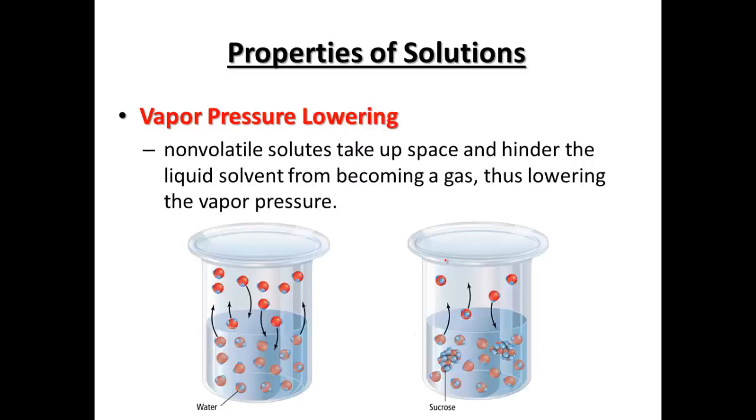If we add more particles in, say we add some glucose in, that glucose is going to hinder the gas from being able to move from a liquid to a gas form or a gas back to a liquid. So if we just have water we have a much larger vapor pressure versus if we have sugar water that's interfering with the liquid becoming a gas and we have a much lower vapor pressure.